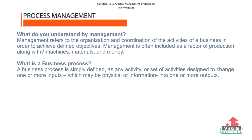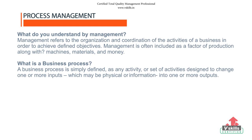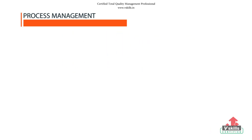Next, what is a business process? A business process is simply defined as any activity or set of activities designed to change one or more inputs, which may be physical or information, into one or more outputs.